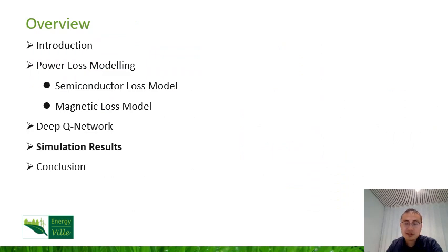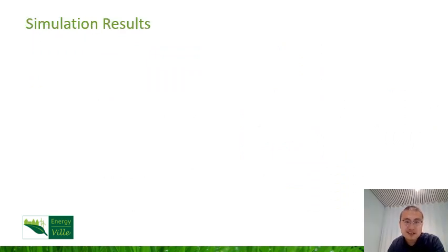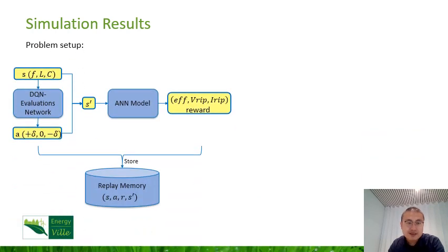Then, the simulation results. When it comes to the DC-DC power converter design problem, the iterative updating process is as shown in this figure. Here, the state S is defined as the frequency, capacitance, and inductance values, which are also the inputs of the ANN module. The actions are defined as parameter tuning movements, which means there are three tuning options for each input: increasing, staying unchanged, or decreasing. For the state with three variables and three possible actions for each variable, there are 27 possible updating actions.